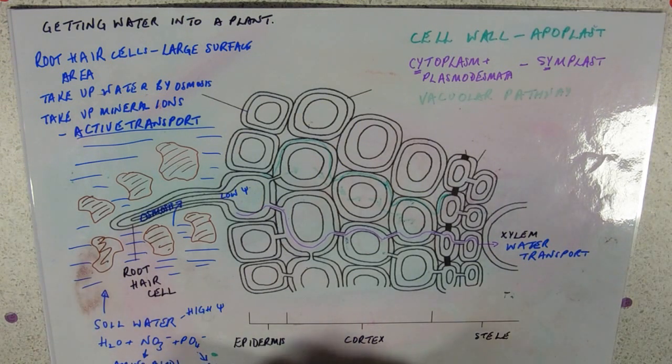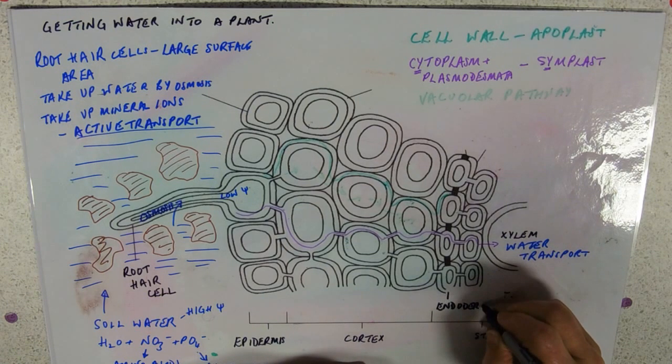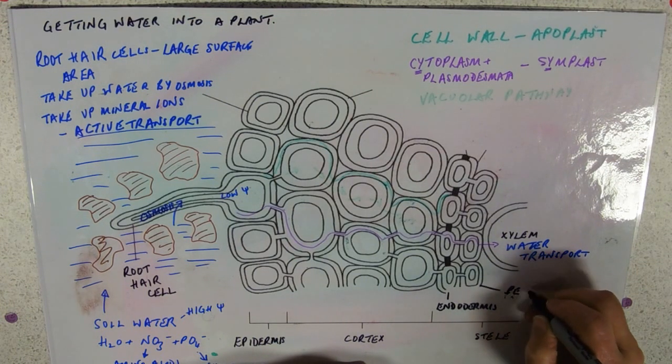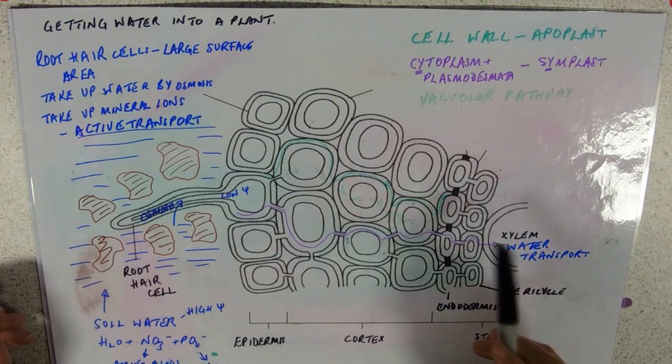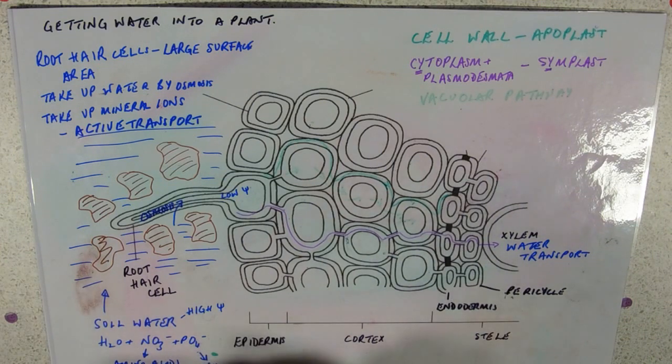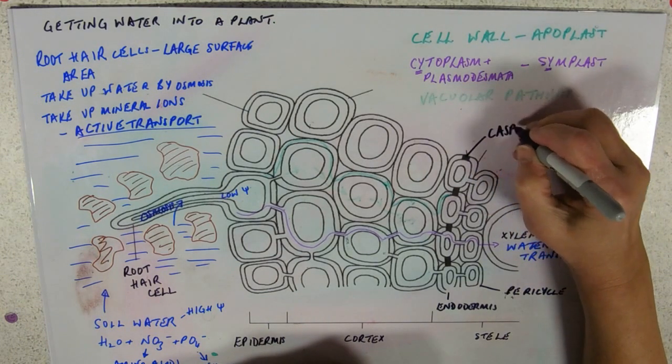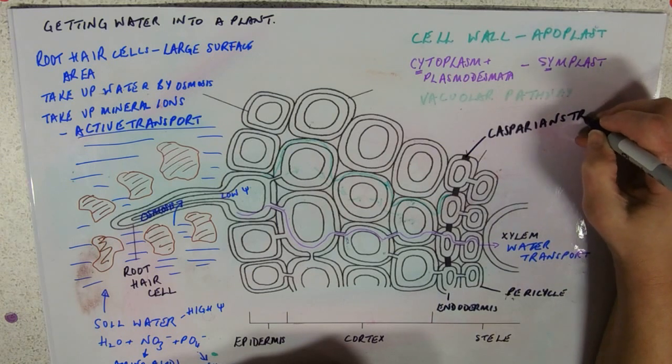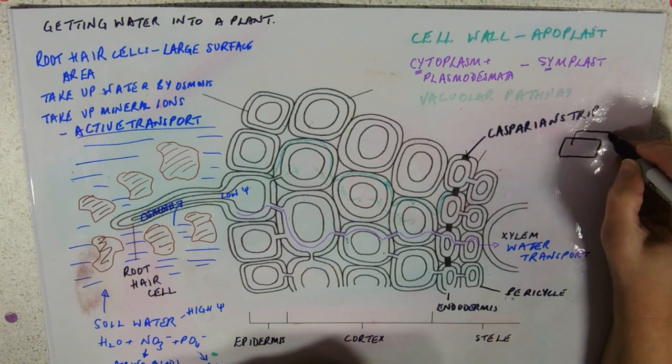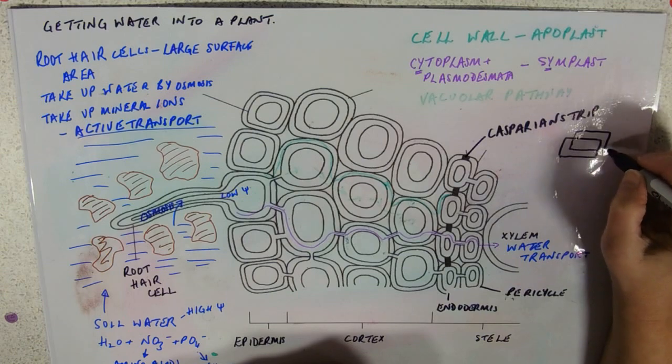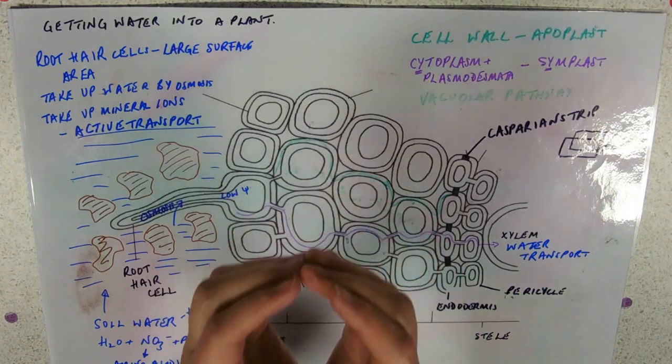So remember our two layers. Here we've got the endodermis, and here we've got the pericycle. And you'll see that I kind of stopped my apoplast pathway there. And that's because of this, which is called the Casparian strip. And if you drew a sort of 3D version of the endodermal cells, remember that they go all the way round and up, round the central stele. So it's everywhere.